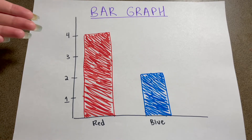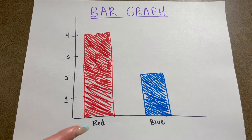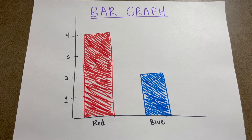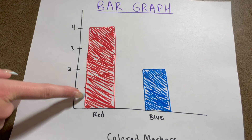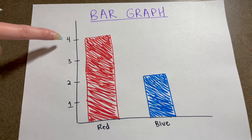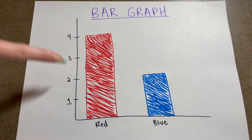So this is a bar graph. The things we are measuring are on the bottom — we're measuring colored markers in this bar graph. On the bottom we'll have our categories: red and blue. Each group has a bar that says how many there are, and the amount is on the side. So you can have up to four colored markers. For red, if you go all the way up and drag your finger over, you can see we have four red markers. And if you go to the top of the blue bar and drag your finger over, you'll see we have two blue markers.